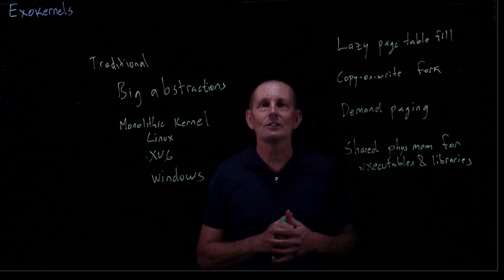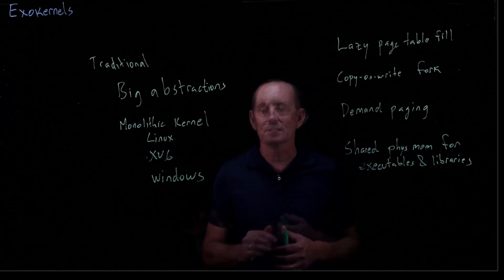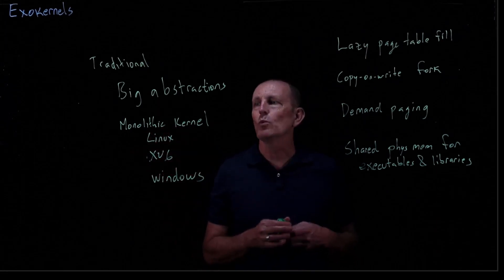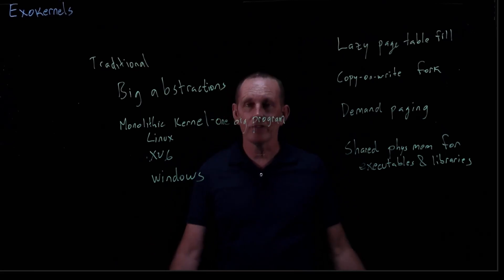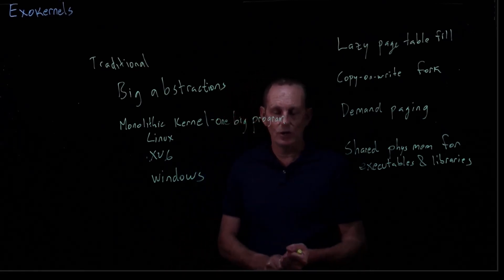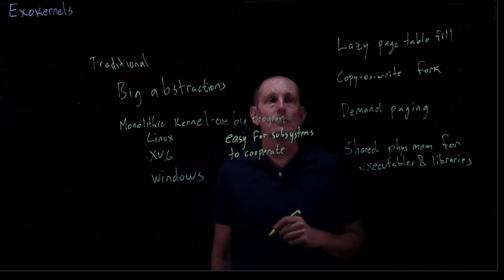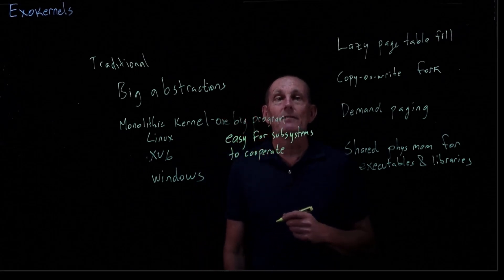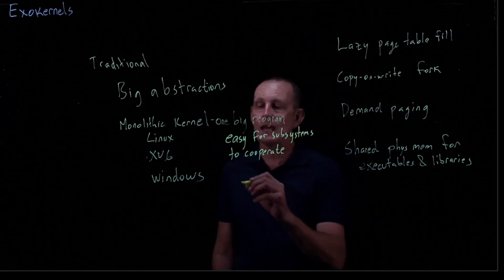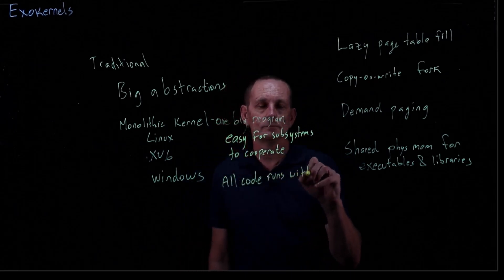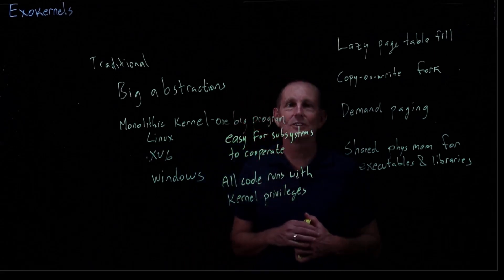Indirection helps the kernel do virtualization, hide things, and revoke things from users without them seeing. When we have a monolithic kernel, it's one big program. One big program means it's easy for any part of code to call any other part of code — easy for subsystems to cooperate. One subsystem can, if necessary, read the data structures of another subsystem and easily call functions in another subsystem. All the code runs with high privileges, so there are no security restrictions between them — for the most part, this is a good thing.